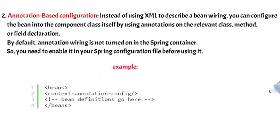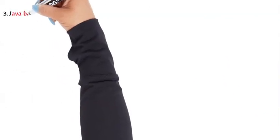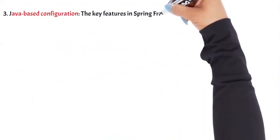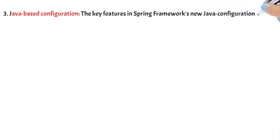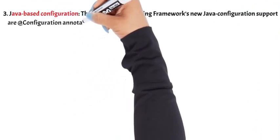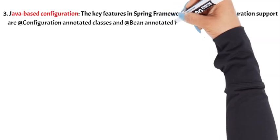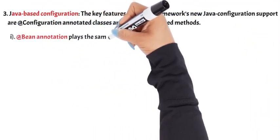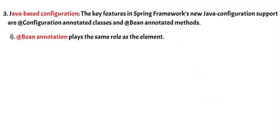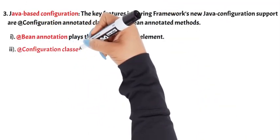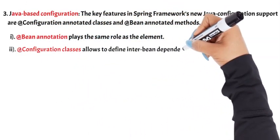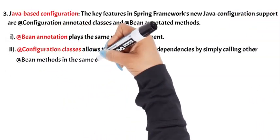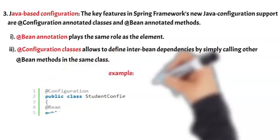3. Java-based configuration. The key features in Spring Framework's new Java configuration support are the @Configuration annotated classes and @Bean annotated methods. The @Bean annotation plays the same role as the XML bean element. The @Configuration classes allow defining inter-bean dependencies by simply calling other @Bean methods in the same class. For example.